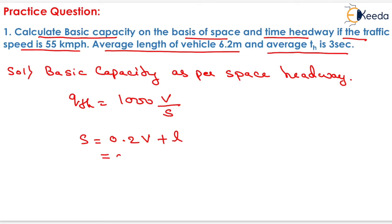In the question v is given as 55 km per hour plus length of vehicle is given as 6.2. On solving this that is 0.2 into 55 plus 6.2 it will be equals to 17.2 that will be the space headway.